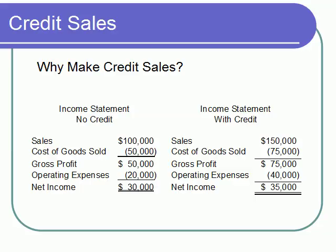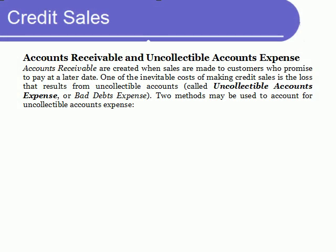There is another cost that's incurred when credit sales are made. This cost is referred to as a bad debt loss, or an uncollectible account expense. And it occurs when a sale is made to a customer who simply never pays. When accounts go bad, the company must write off the customer's account receivable balance. Companies generally have two methods they can use: one is called the direct write-off method, and the other is called the allowance method.